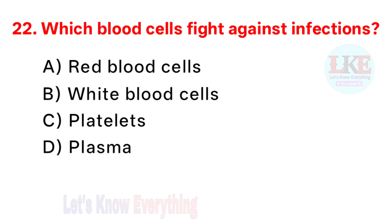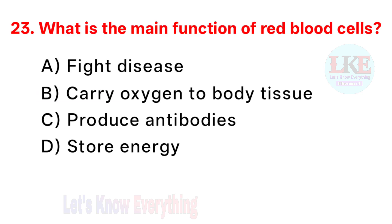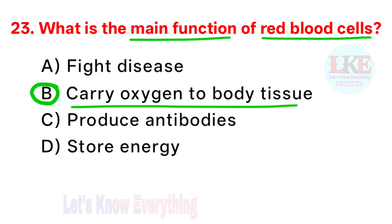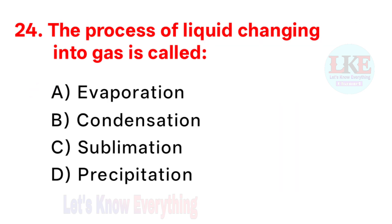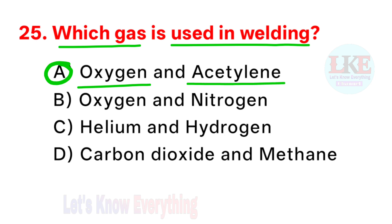Question number 22: which blood cells fight against infections? Right answer option B: white blood cells. Question number 23: what is the main function of red blood cells? Right answer option B: carry oxygen to body tissue. Question number 24: the process of liquid changing into gas is called evaporation. Question number 25: which gas is used in welding? Right answer option A: oxygen and acetylene.